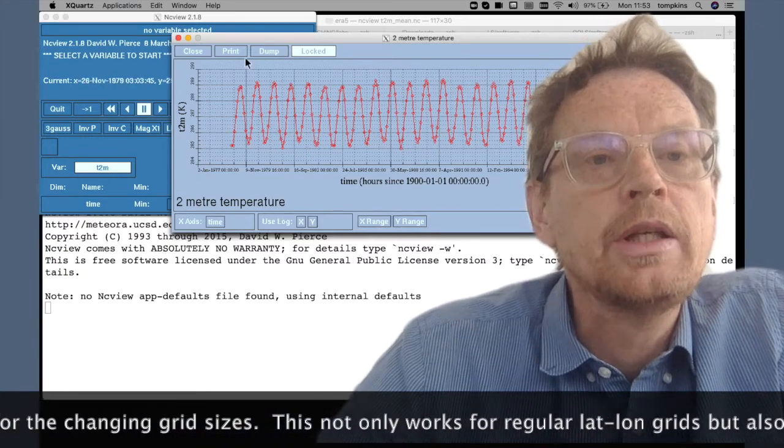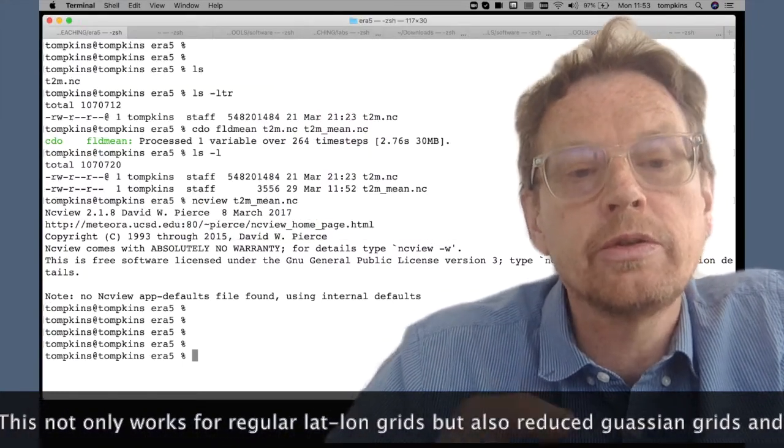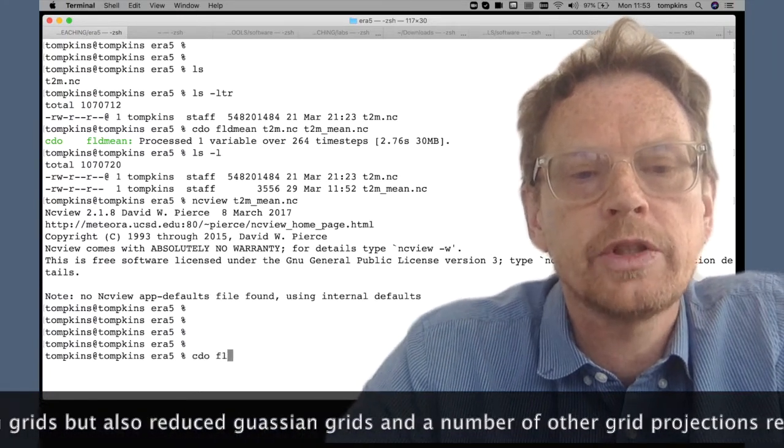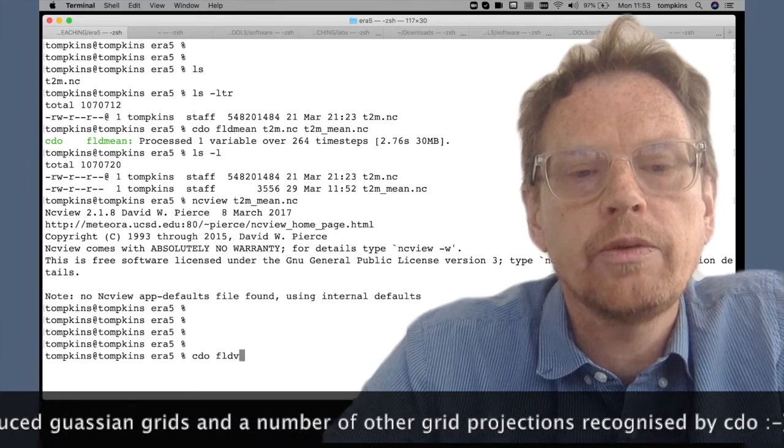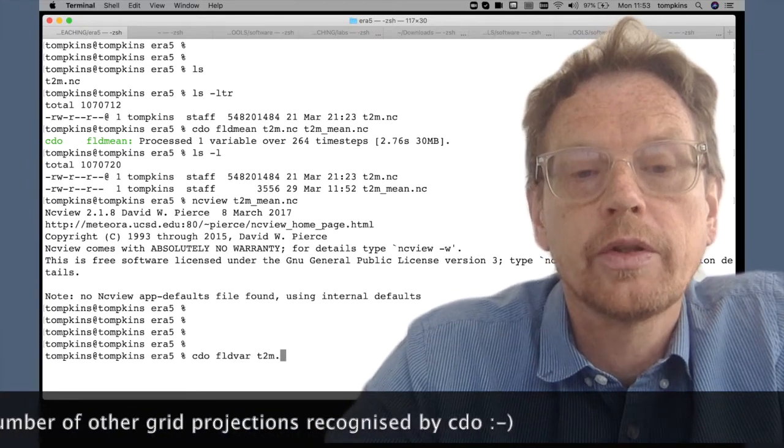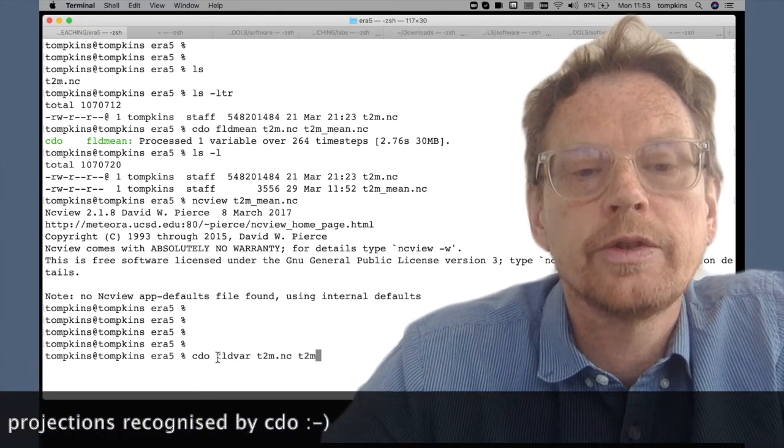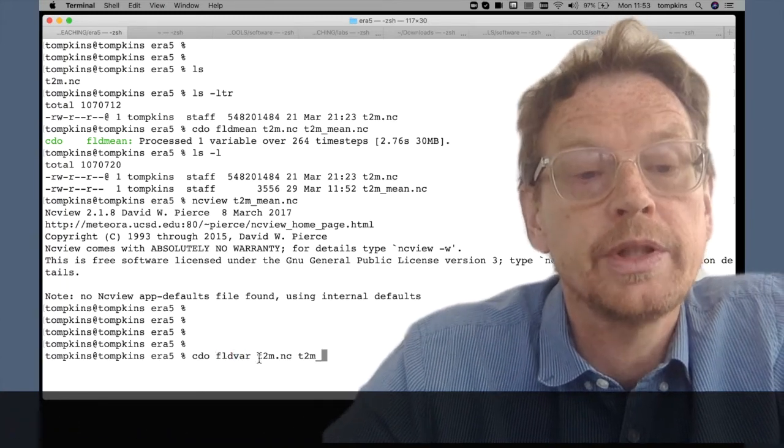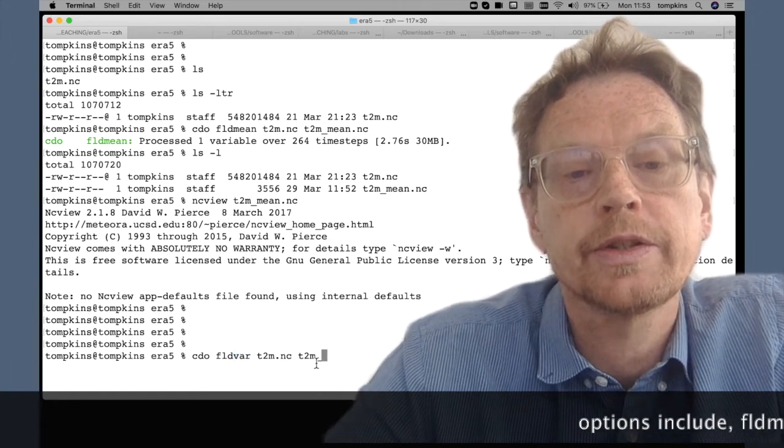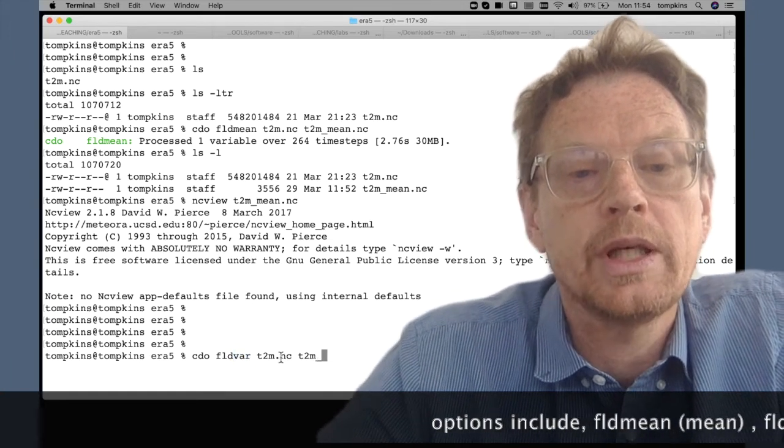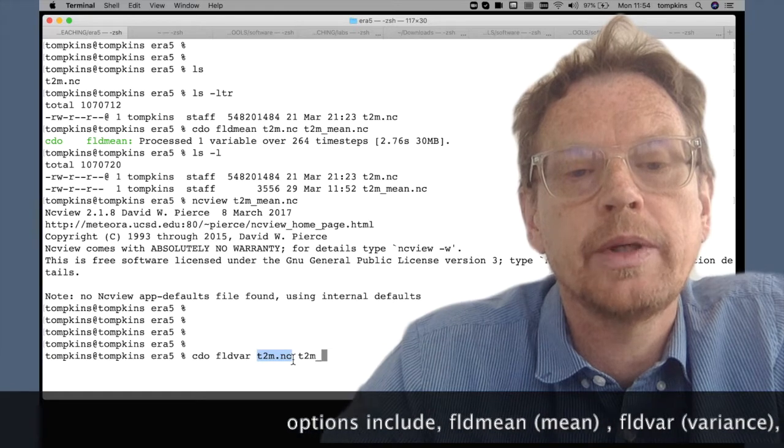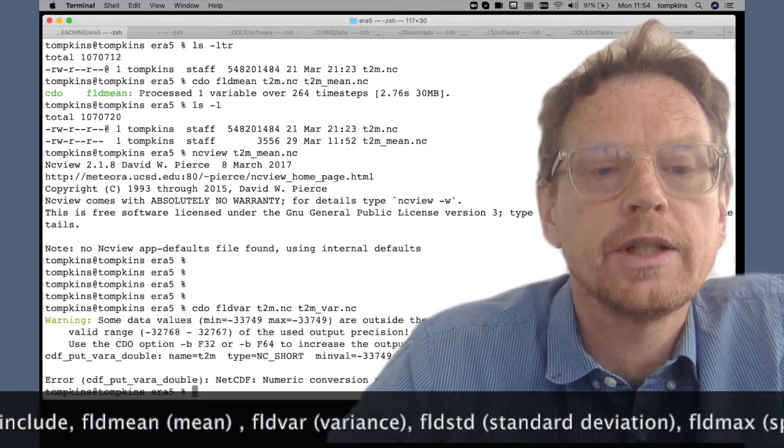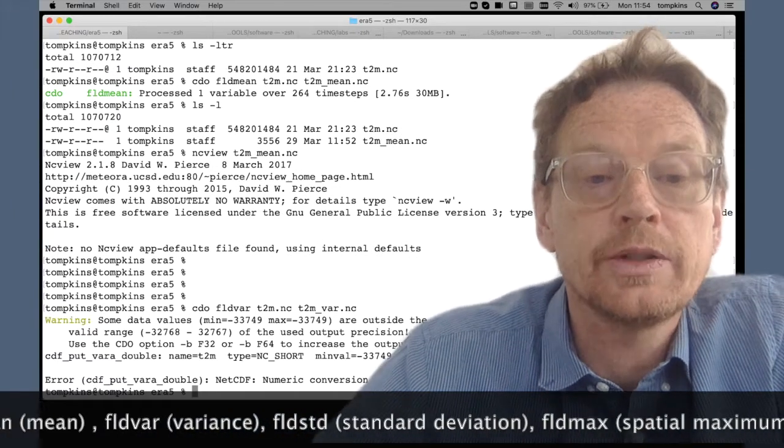Now in CDO there are statistical functions that we substitute for the mean. So instead of just doing the field mean we can for example calculate the spatial variance field for the spatial calculation of the statistic. But instead of mean you simply substitute var for variance and we have the input file name T2M and the output file name here T2M underscore var.